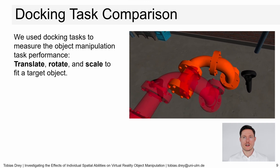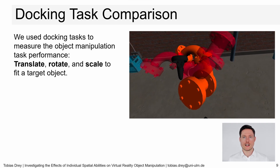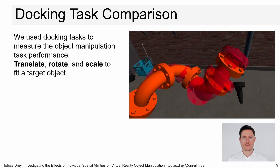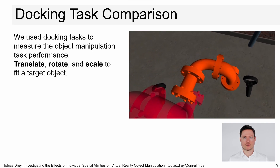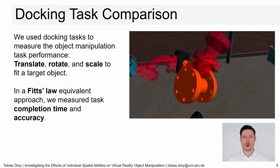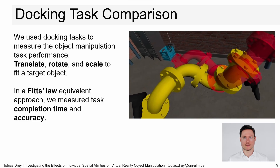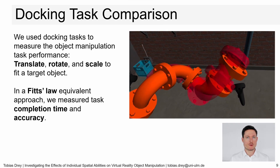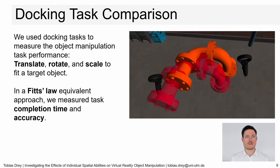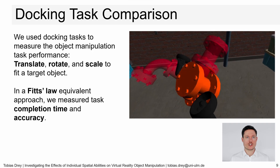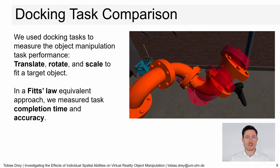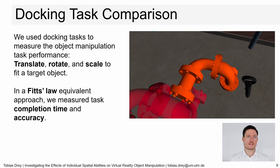In a docking task, a source object has to be translated, rotated, and scaled to fit a target object. For example, you can see in the video how the solid source pipe is manipulated to fit the transparent red target pipe. In a Fitts' law equivalent approach, we measure task completion time and accuracy. Therefore, we present our own Fitts' law adaption, as nothing suitable for controlling the difficulty of our tasks was defined until now. This was necessary to adjust the difficulty of our docking task, as it is essential for Fitts' law studies. Please find the details in our paper.